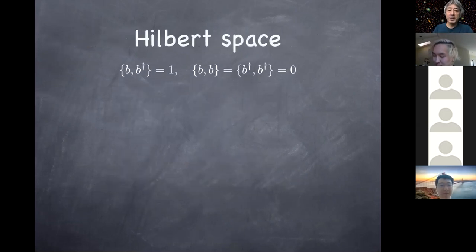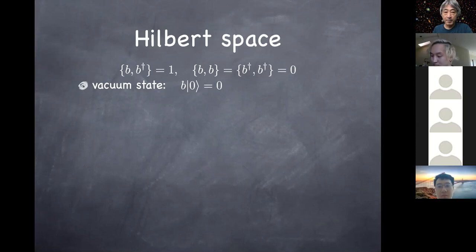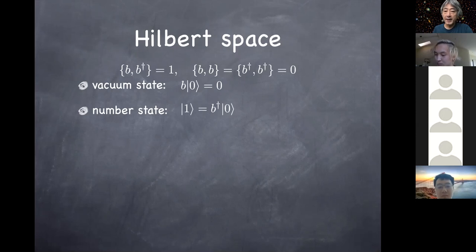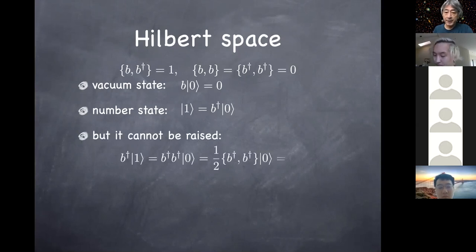What do these anti-commutation relations give us? We define the vacuum state as usual — the state annihilated by the annihilation operator B. Then we create a one-particle state by acting the creation operator on the vacuum. So far it looks exactly the same as in the bosonic case. But when you try to create yet another particle, this is where you see the difference — because it cannot be raised any further in the case of fermions.